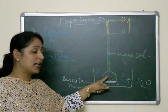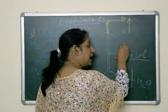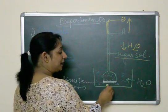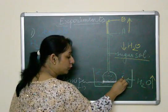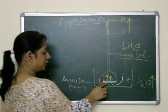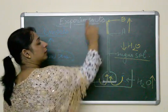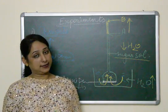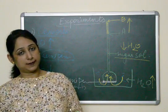This rise takes place due to osmosis. The sugar solution has less water but more solute, while the beaker has more water. Due to osmosis, water moves from its higher concentration to its lower concentration through the semi-permeable membrane into the sugar solution, causing the level in the thistle funnel to rise.